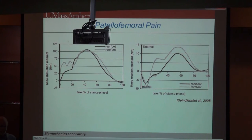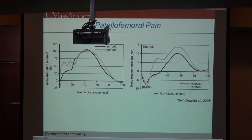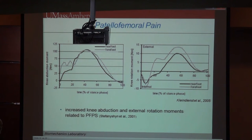The last injury is patellofemoral pain. A study by Plankiez in Germany showed the knee abduction moment and knee internal/external rotation moment are significantly different between forefoot and rear foot runners. Another study suggested that increased knee abduction and external rotation moments are related to patellofemoral pain, so this situation could clearly be a precursor to patellofemoral pain.